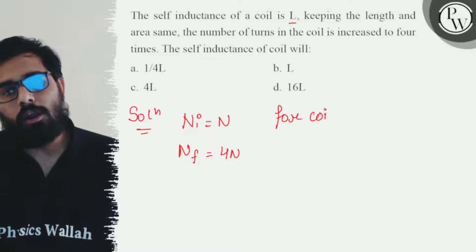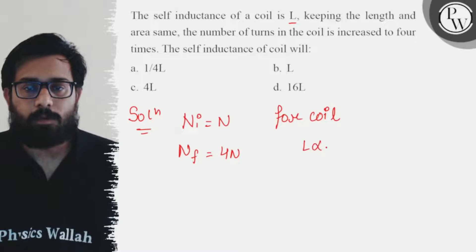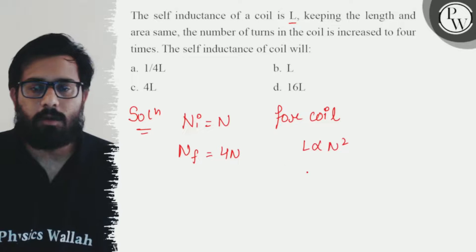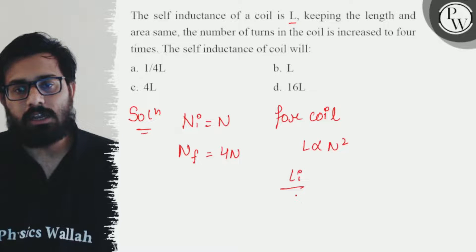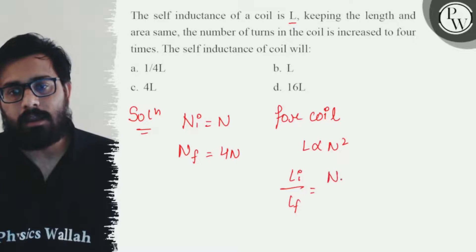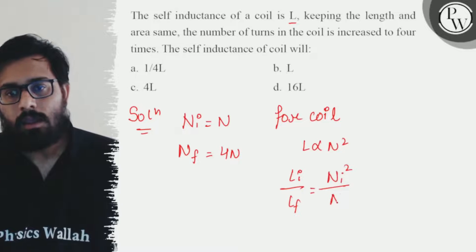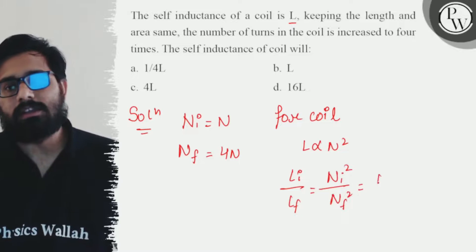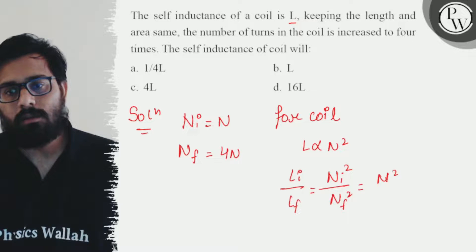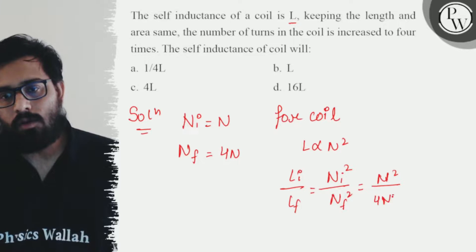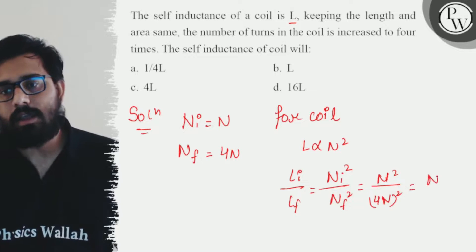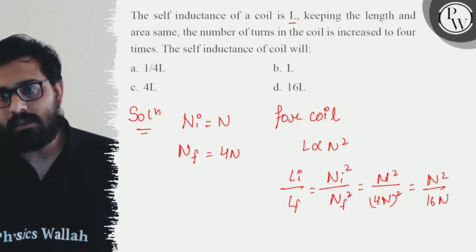And we know the relation for a coil. For coil, we simply say that L is proportional to the N square where N is the number of turns. So L initial upon L final, this can be written as N initial squared upon N final squared. So this can be written as N squared divided by 4N squared.